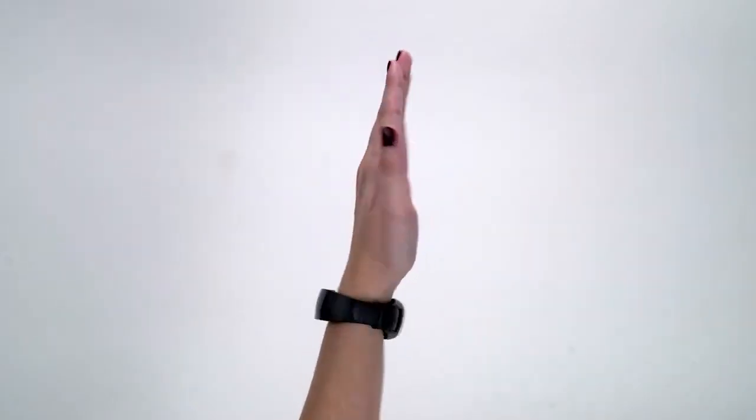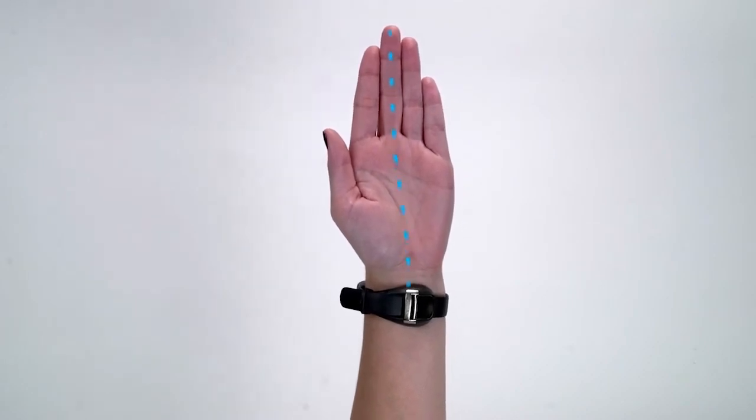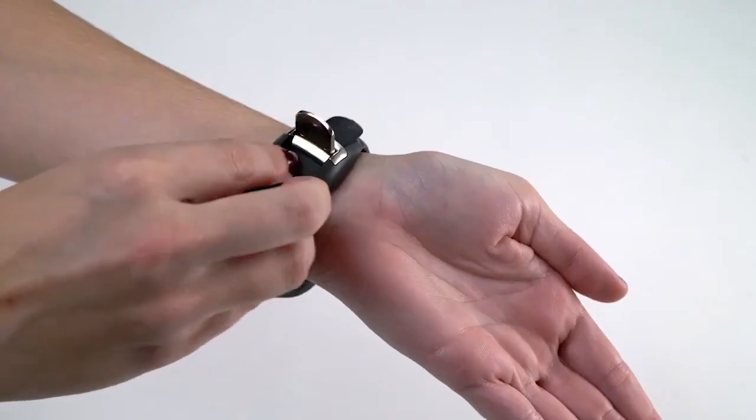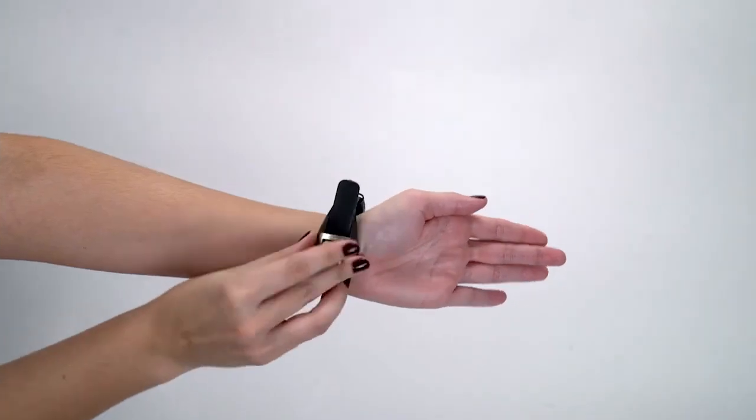You should feel a light tingling in your palm and or middle fingers. This signals that the device is positioned correctly. You may need to slightly adjust the position of the contact pads.